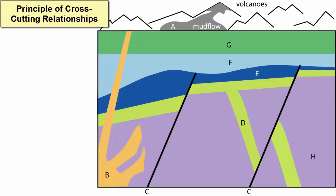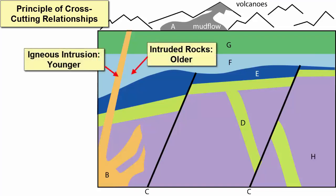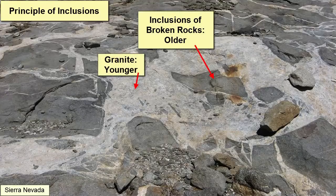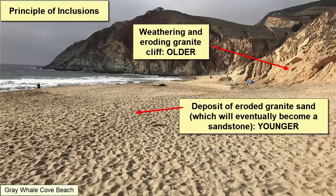The principle of cross-cutting relationships describes how certain geologic events — such as folding, faulting, magma intrusion, and erosion — are younger than the rocks they alter. For example, igneous intrusions are younger than the crustal rock into which they intrude, and faults are younger than the strata they fracture. It is often possible to determine the relative ages of several mutually cross-cutting intrusions and faults. Inclusions are pieces of one rock found within another, and included rocks must be older than the rocks in which they are found. For example, a cliff face of granite will weather, and pieces of that weathered granite will make their way into beach sands — so the sandstone that forms must be younger than the granite pieces within.